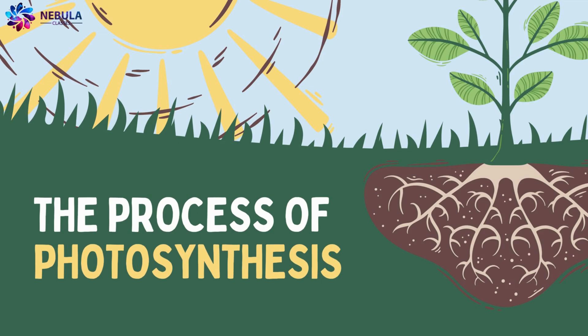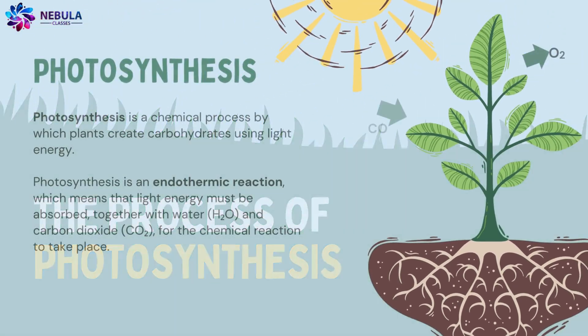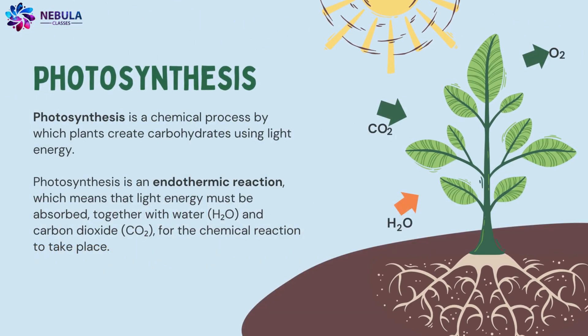Photosynthesis is a chemical process by which plants create carbohydrates using light energy. Photosynthesis is an endothermic reaction, which means that light energy must be absorbed together with water and carbon dioxide (CO₂) for the chemical reaction to take place.